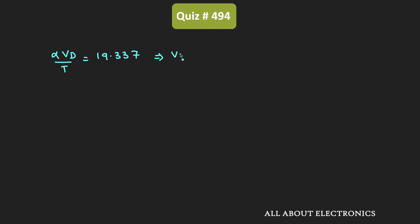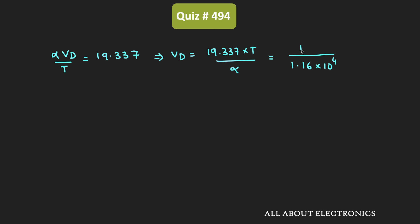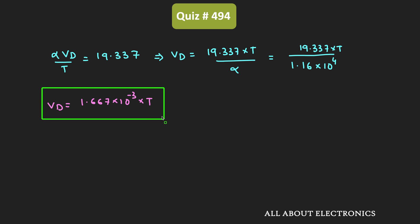Or further we can say that this voltage Vd is equal to 19.337 times T divided by α. So now let us put the value of α. Here the value of α is equal to 1.16 times 10 to the power 4 Kelvin per volt. So we can say that Vd is equal to 19.337 times T divided by α. If we further simplify it, then Vd is equal to 1.667 times 10 to the power minus 3 times T. In this way, we got the expression of the diode voltage in terms of temperature.